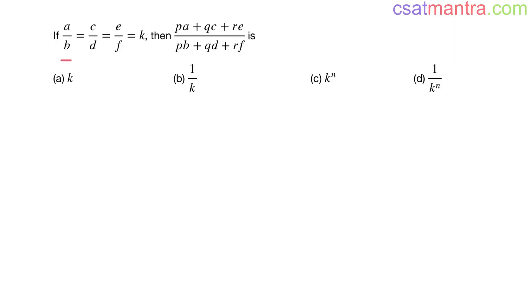If a/b = c/d = e/f = k, then (pa + qc + re)/(pb + qd + rf) = k. Here a, c, e are in the numerators and b, d, f are in the denominators.